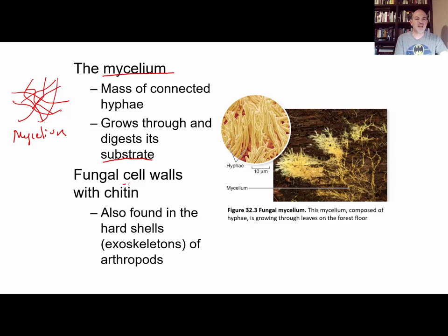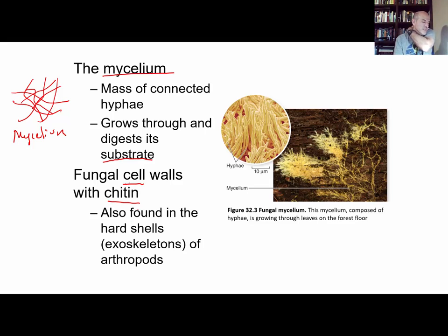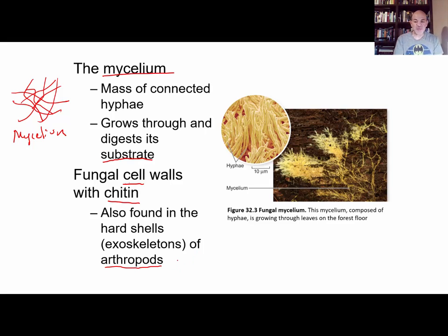The walls of the hyphae, which hold the cytoplasm in place, are cell walls made of a polysaccharide called chitin. Chitin is a modified sugar containing nitrogen. Interestingly, the same material chitin is found in animals — specifically arthropods, which include insects, crustaceans like crabs and lobsters, arachnids like spiders, and centipedes. These are all animals that have an exoskeleton made of chitin.